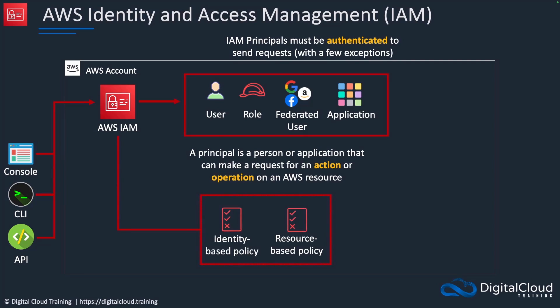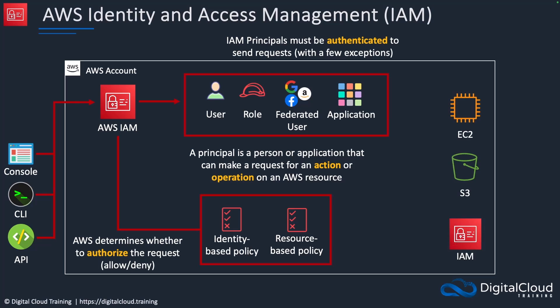First we have authentication — that's essentially proving that you are who you say you are, for example by supplying a password. Then we need authorization. Authorization is where we either are allowed or denied access to resources. Here we have policies like identity-based policies and resource-based policies, which define what we are allowed to do.